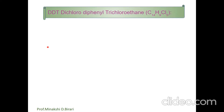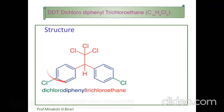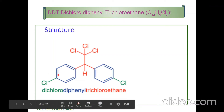The molecular formula of DDT is C14H9Cl5, which stands for dichlorodiphenyltrichloroethane. This is the structure of DDT having 14 carbons, 9 hydrogens, and 5 chlorine atoms.